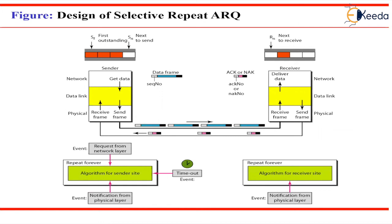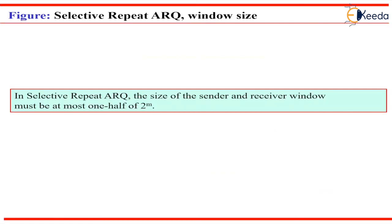The design of Selective Repeat ARQ protocol is similar to Go Back N but more complicated. The size of the sender window must equal the size of the receive window, and both must be at most one half of 2 raised to m.